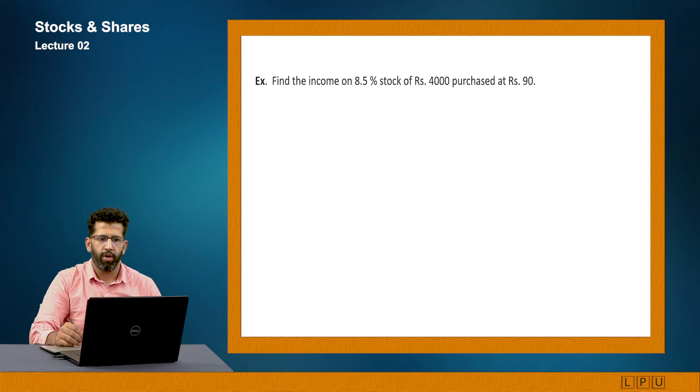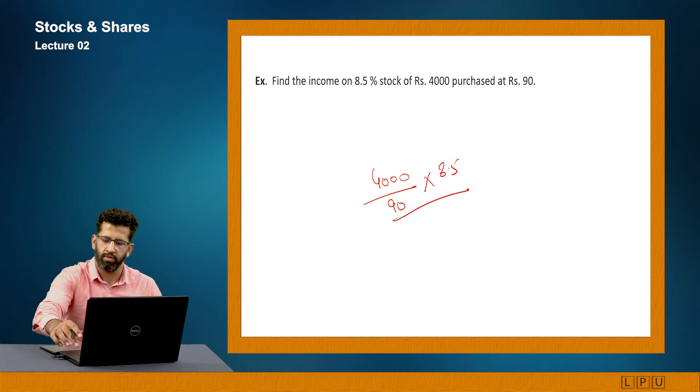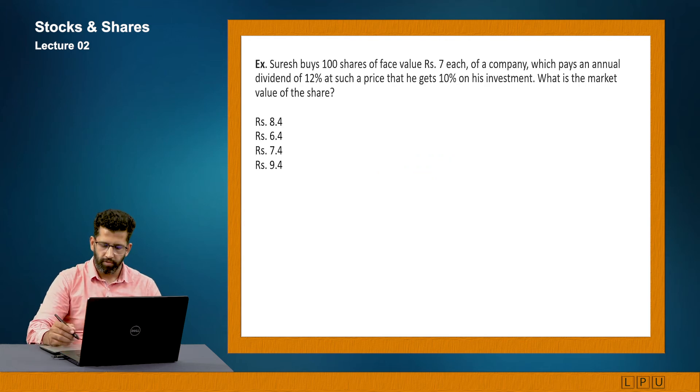Find the income on 8.5 percent stock of rupees 4000 purchased at rupees 90. Now again, how many shares he would have purchased? He would have purchased 4000 divided by 90. This is the number of shares he would have purchased multiplied by how much amount he is getting per share, 8.5. So you just have to solve this and you will get your answer. The same concept that we discussed in the last question is applied in this question.